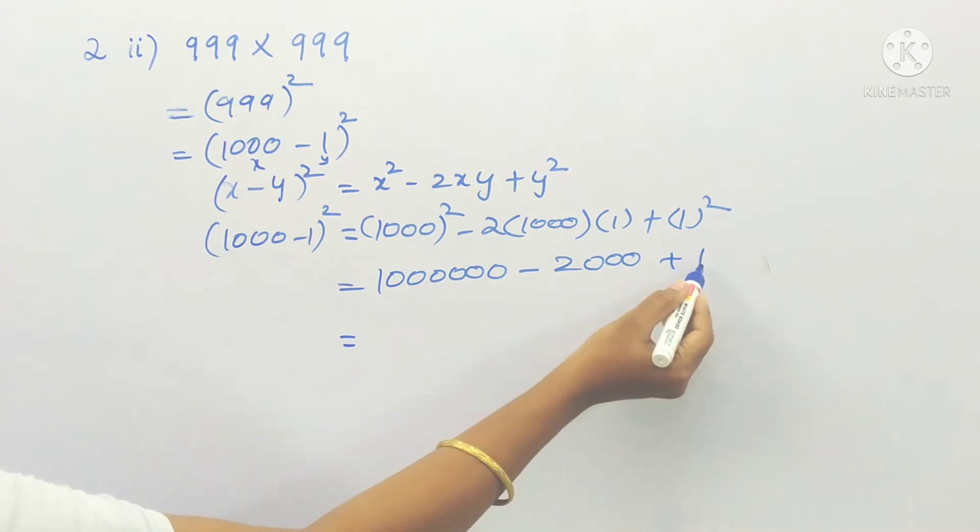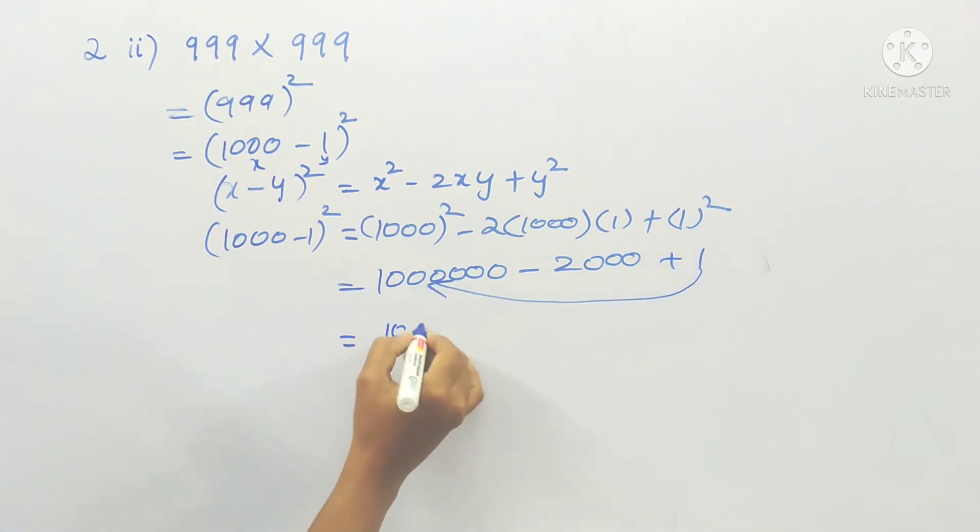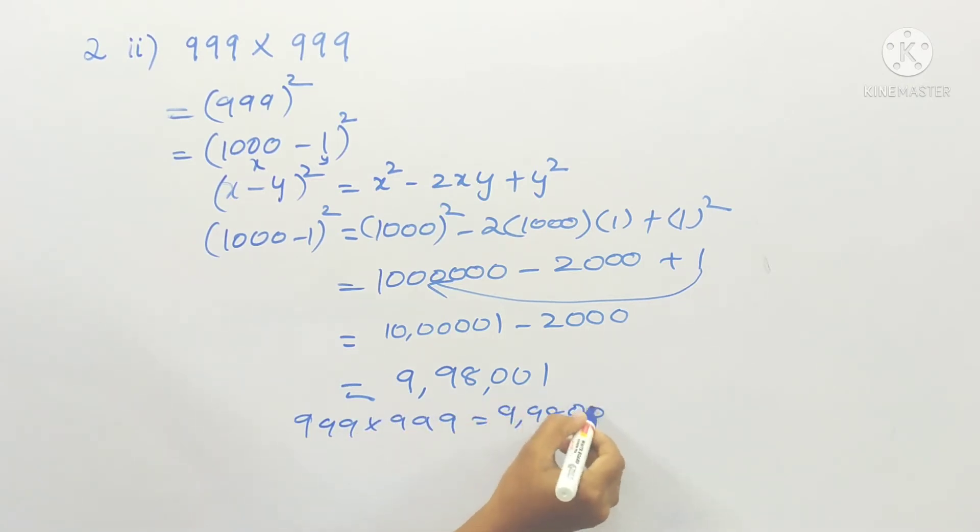So it is, if we add addition, it is 10 lakh 1 minus 2000. So if we subtract we get 9 lakhs 98,001. Therefore 999 into 999 is equal to 9 lakhs 98,001.